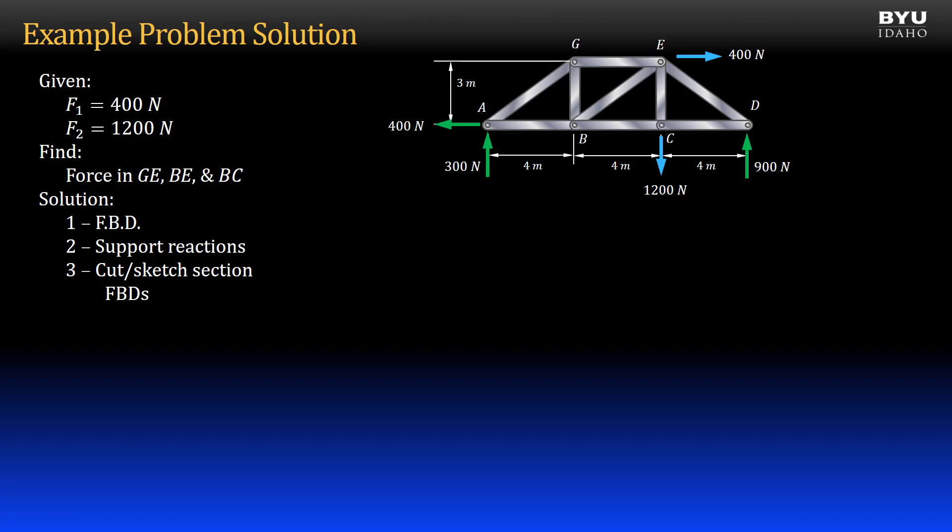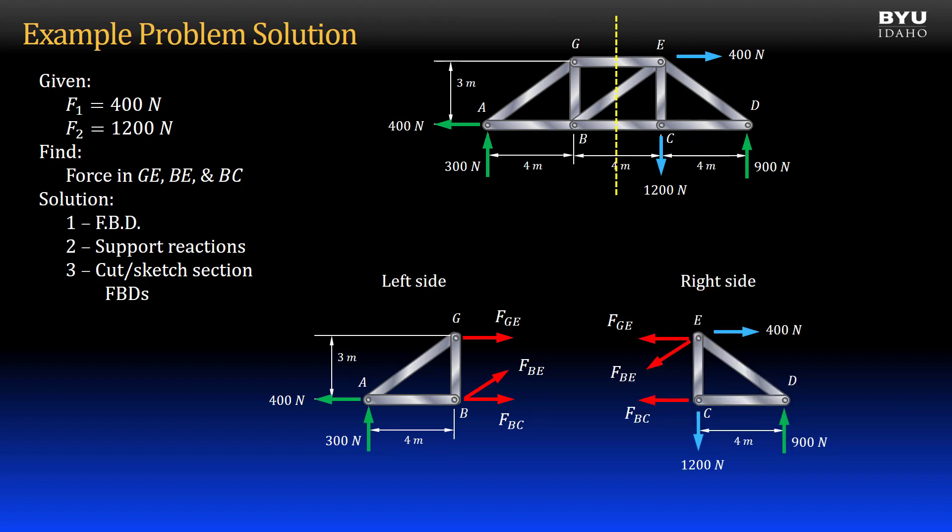The next step is to cut through the target members of our truss and draw a free body diagram of the cut section. We can slice all target members with a single cut. The section free body diagram for the left side looks like this. The section free body diagram for the right side looks like this.